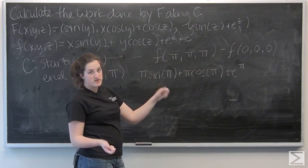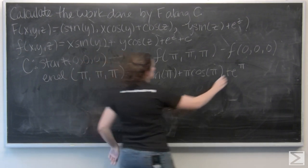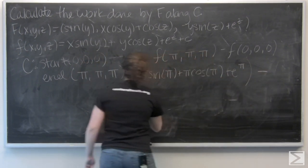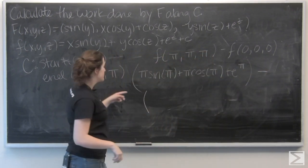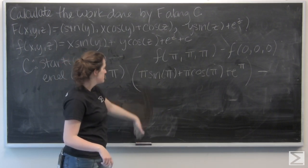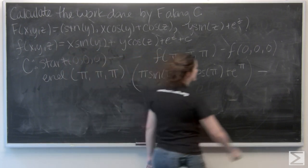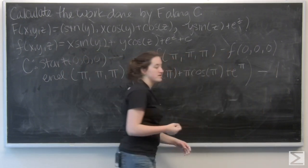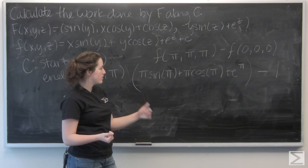Let's go ahead and plug in 0, 0, 0. So, I've got 0 sine 0 plus 0 cosine 0 plus e to the 0, which is just 1. 0 sine 0, 0 cosine 0, obviously go to 0, e to the 0 is 1.